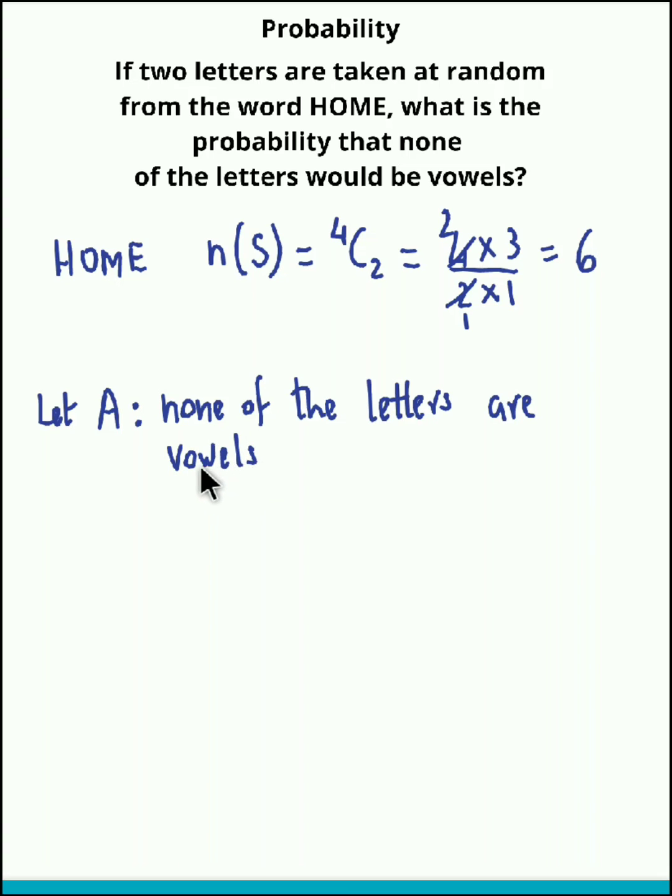Now if we don't wish to select the vowels—here the vowels are O and E—obviously we need to select the two consonants. So therefore n(A), keeping the vowels aside, we can select the two consonants, that is H and M, in 2C2 ways, or you could simply say one way.